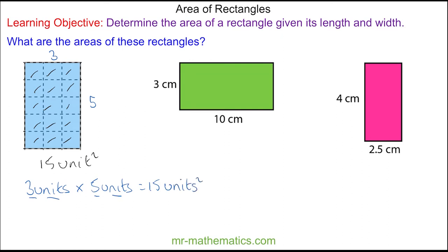The final way of working out the area could be to use a formula, where we have 5 which is the width and 3 which is the length. The area is a product of the length and the width, which is 3 times 5, which is 15 units squared.